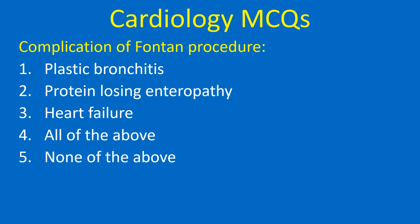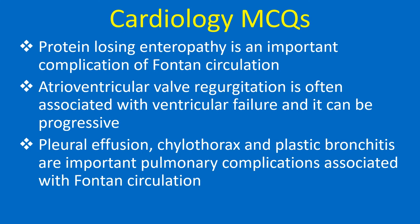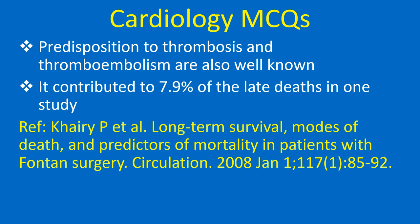Complications of the Fontan procedure: 1. Plastic bronchitis, 2. Protein-losing enteropathy, 3. Heart failure, 4. All of the above. Correct answer: 4. All of the above. Heart failure was the mode of death in 34% in a series of 600 adult Fontan survivors. Arrhythmia or sudden death accounted for 24%. Protein-losing enteropathy is an important complication of Fontan circulation. Atrioventricular valve regurgitation is often associated with ventricular failure and can be progressive. Pleural effusion, chylothorax, and plastic bronchitis are important pulmonary complications. Predisposition to thrombosis and thromboembolism are also well known, contributing to 7.9% of late deaths in one study.